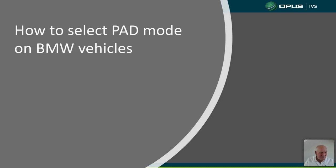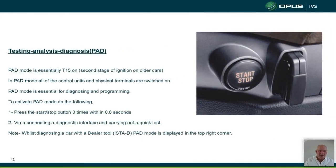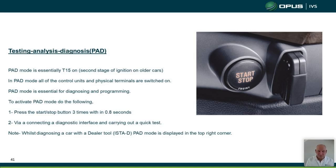PAD mode, which comes with G-series vehicles, can be tricky to activate because you have to be very quick. You need to press the start/stop button three times within 0.8 of a second — that will turn on PAD mode and keep the ignition on for programming and diagnostics. If you press it once or twice, it will bring the lights on in the instrument cluster but the ignition will not stay on and will time out, causing programming failures. After pressing three times, check the instrument cluster to confirm the engine symbol is lit.